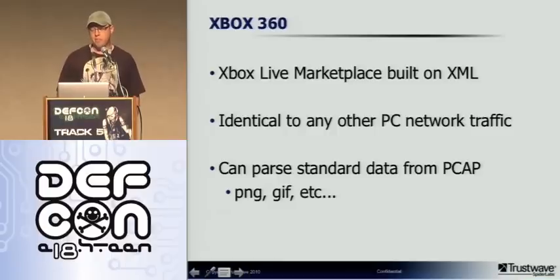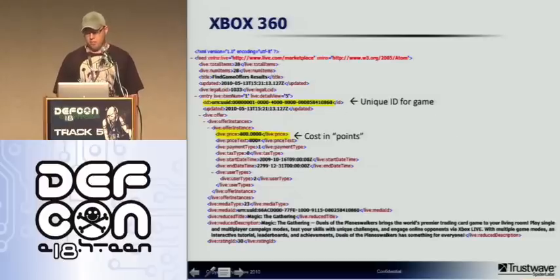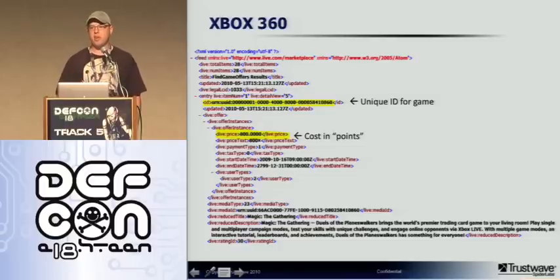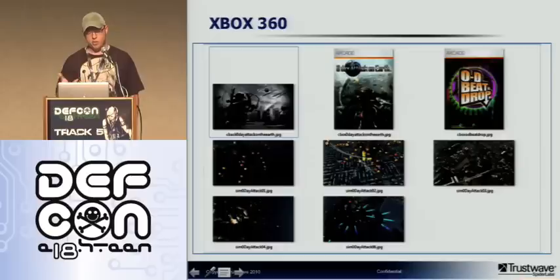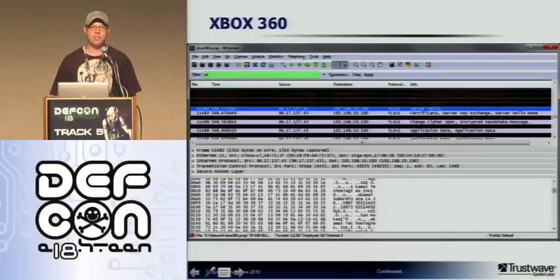First, the 360. The Xbox Live marketplace is really built on XML — no surprise there. It's identical to other PC traffic you might see. You can parse data from the PCAP and extract stuff using something like Foremost or Network Miner to pull out images and files. Here's a sample XML page from PCAP analysis: the first notable thing highlighted is the unique ID for the game. There's also a cost in points — on Xbox Live you buy points and then spend them. All the purchase traffic is SSL/TLS.